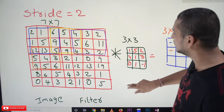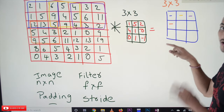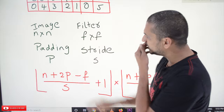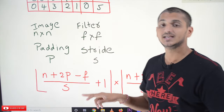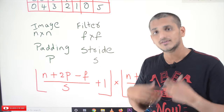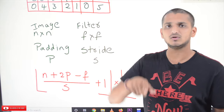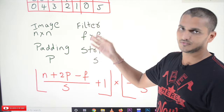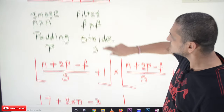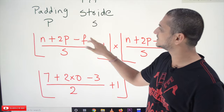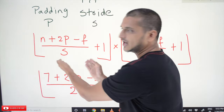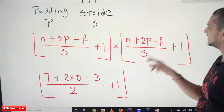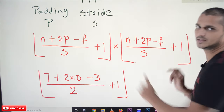Now let's understand what the final image size will be after doing convolution. If the image is n by n, the filter is f by f, padding is p, and stride is s — the output image size formula is: floor of ((n + 2p − f) / s) + 1. We take the floor value if we get any fraction. In our above examples we did not consider padding; if p equals 1 we are adding a padding value, and s can be 1, 2, or any value.